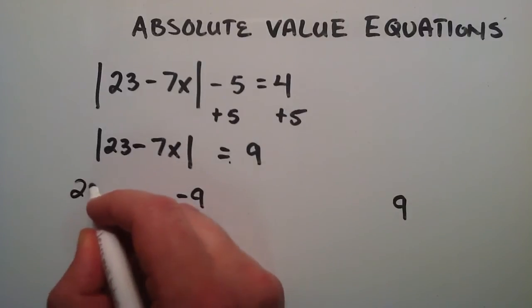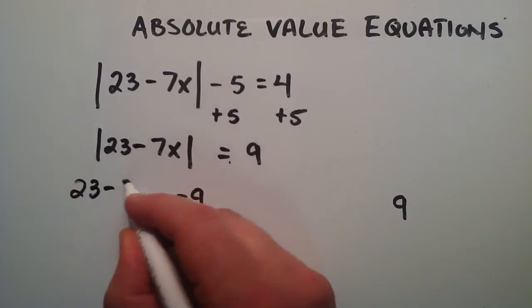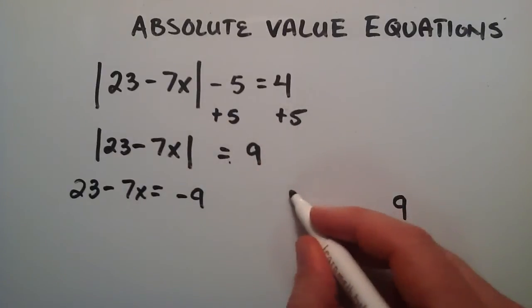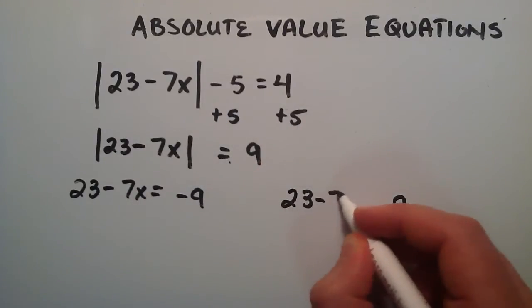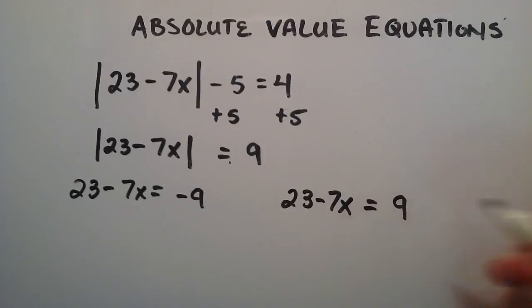So we just simply write that down. 23 minus 7x equals negative 9 and 23 minus 7x equals positive 9.